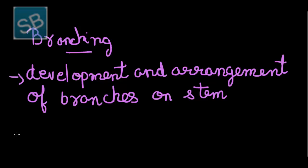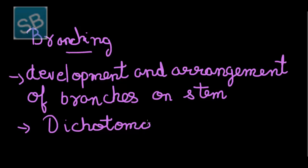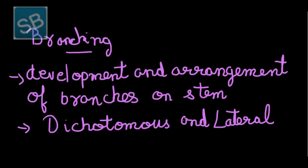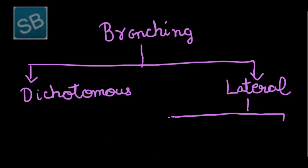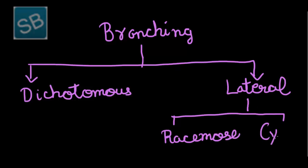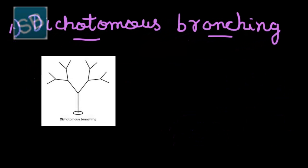There are basically two types of branching: racimose and cymose. First of all, let us begin with dichotomous branching. In this type of branching, the apical bud continuously divides into two branches, which further divide into two, and it continues the same.